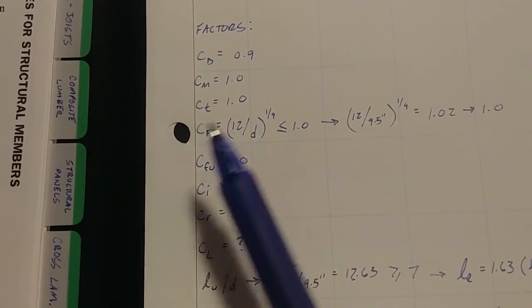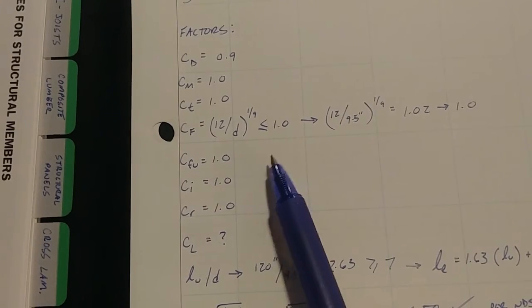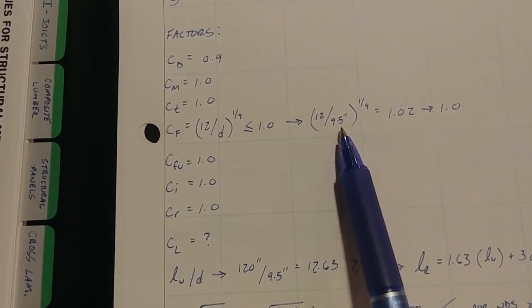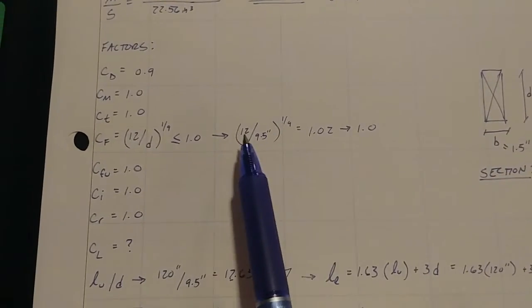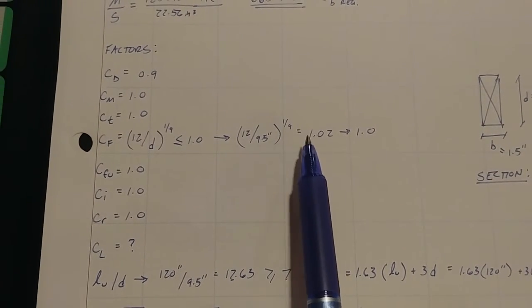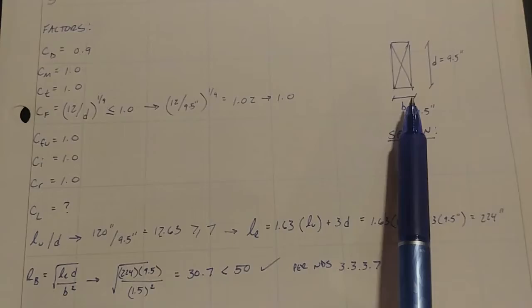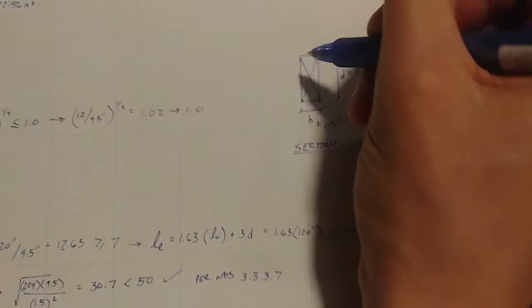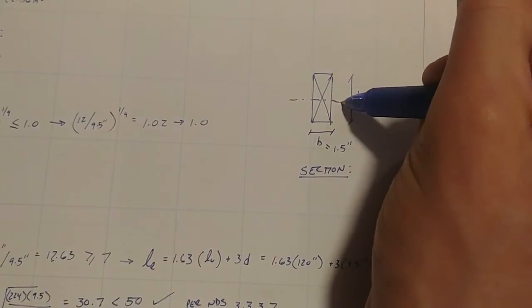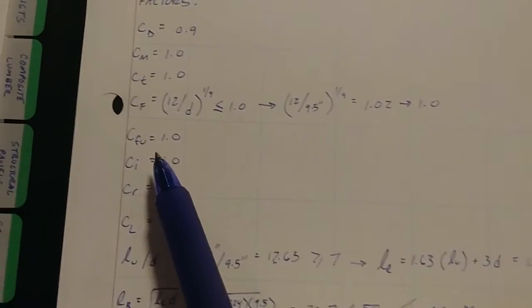CF. Again, this equation comes from the book. It's 12 over D raised to the 1/9th, and it has to be less than or equal to 1.0. So 12, your depth is your depth of your beam, which is 9.5 inches because we're doing a two by 10. That gets you 1.02. So can't be greater than one. So it's just 1.0.